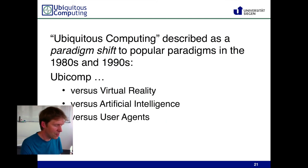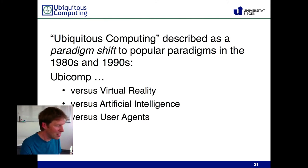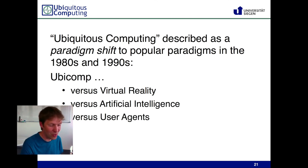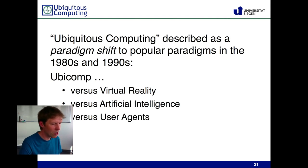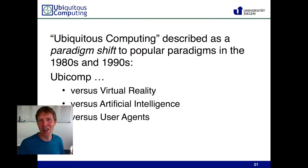To recap: Ubiquitous Computing was described as a paradigm shift completely different from the computing paradigms of the time. Ubiquitous Computing was definitely not virtual reality, not artificial intelligence, and not user agents. In the next session, we'll see what those three are and how Weiser describes Ubiquitous Computing as something completely different from them.